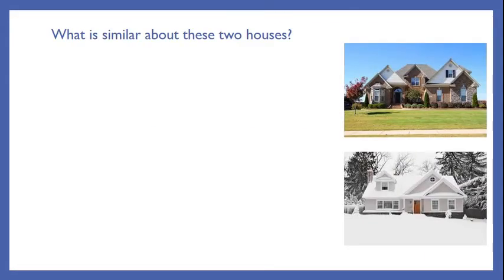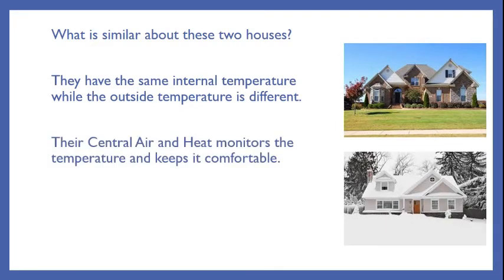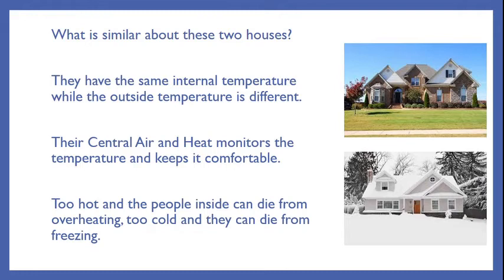I bet the inside of both of these houses is right around 70 to 72 degrees — they probably have the same internal temperature, even though the external temperature is very different. Their central air and heat monitors the temperature and keeps it comfortable. Too hot and the people inside can die from overheating; too cold and they can die from freezing. We obviously have a comfortable temperature we like to stay at.